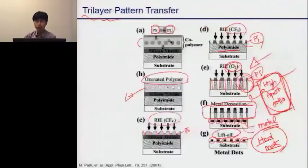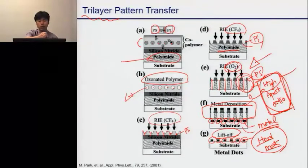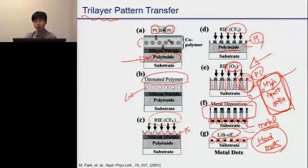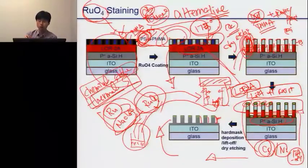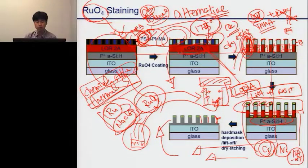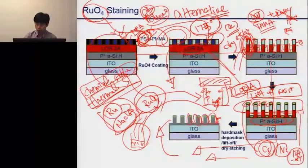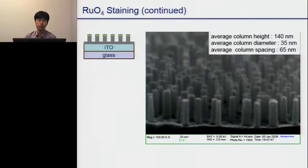In the previous example, the people used polyimide. Polyimide is also known to be thermally stable and chemically stable as well. That is one of the reasons why, in that example, people use polyimide as a spacer layer to achieve this kind of high aspect ratio of the nano pattern.